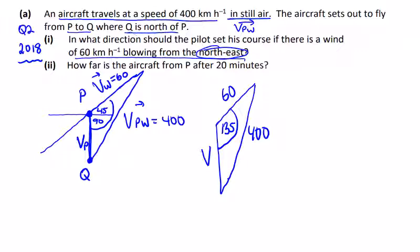Because the wind is coming down in this direction, the plane is going to need to set out this way. So we're looking for this angle in here. We'll call it angle A.